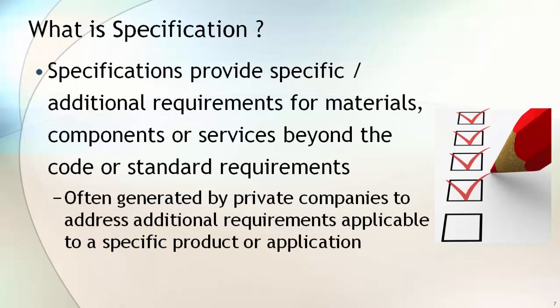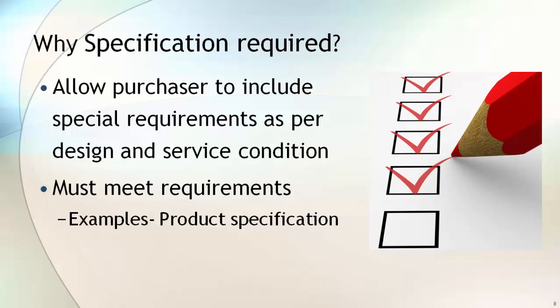What is a specification? A specification provides specific additional requirements for the material, components, or services that are beyond the code or standard requirements. For example, if you want an A106 Grade B pipe with a maximum carbon content of 0.23% against the standard requirement of 0.30% max, you have to specify your requirement in your specification or in a purchase order. Specifications are generally generated by private companies to address additional requirements applicable to specific products or services.